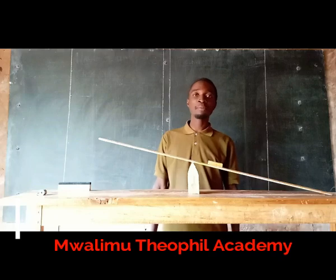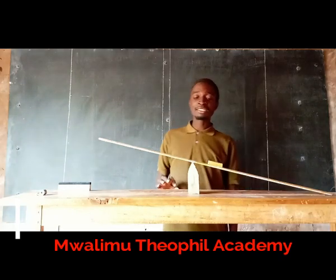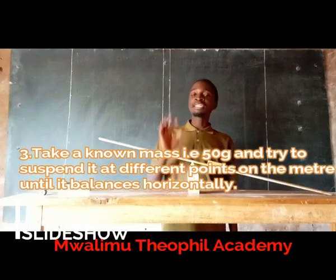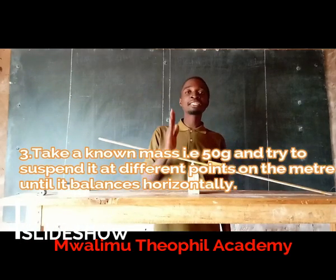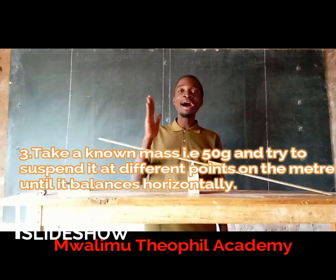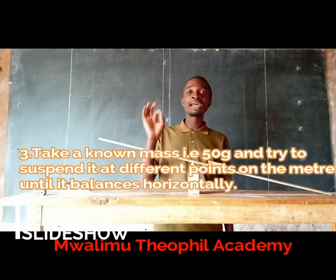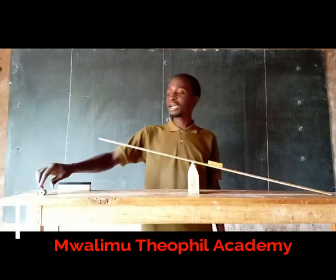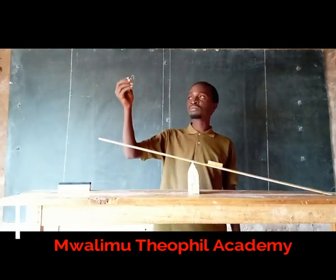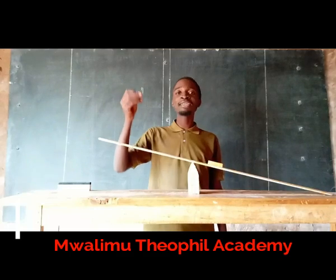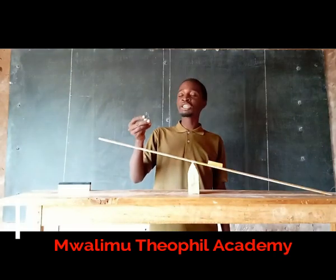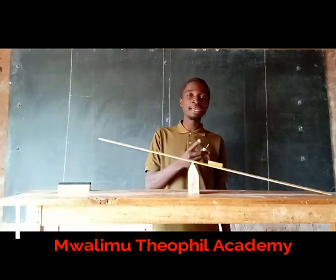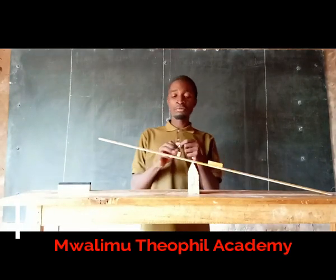In the third step, take the 50 gram mass and start putting it at different positions on the ruler until it balances again horizontally. Let us do it — take your 50 gram mass, as you can see this one, and start positioning it at different points until it balances again horizontally.